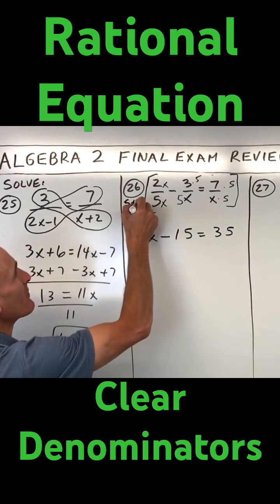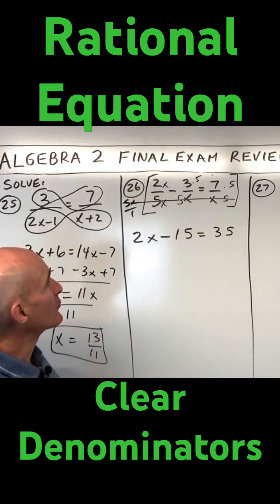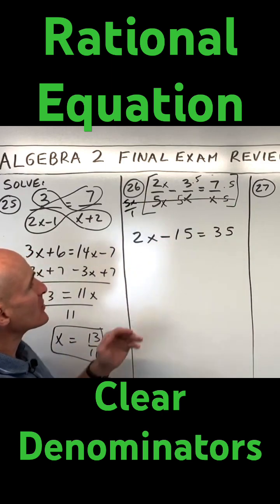Okay, so basically we're just multiplying by 5x to left and right sides, and that's clearing the denominators. That's multiplying through by that 5x. So now let's go ahead and solve.